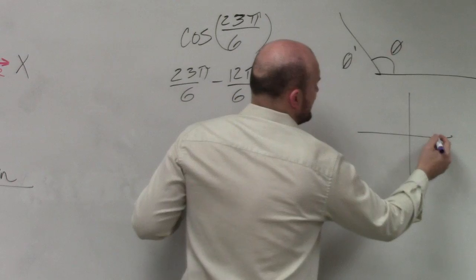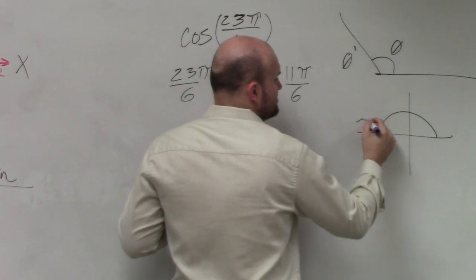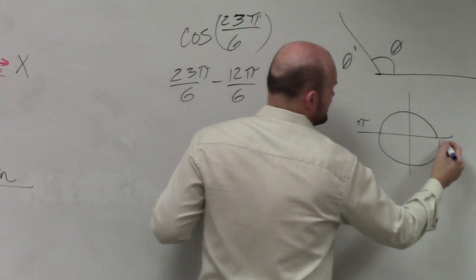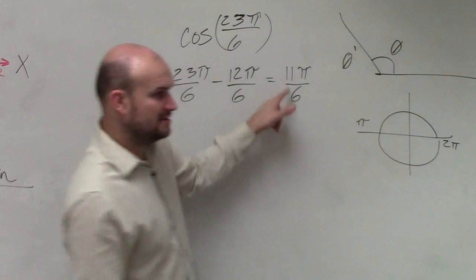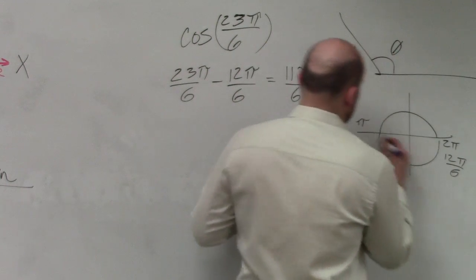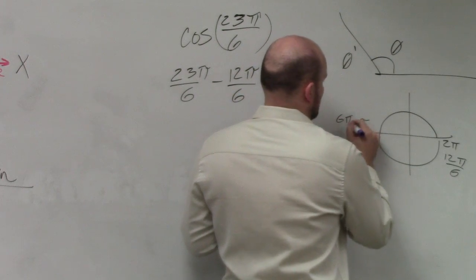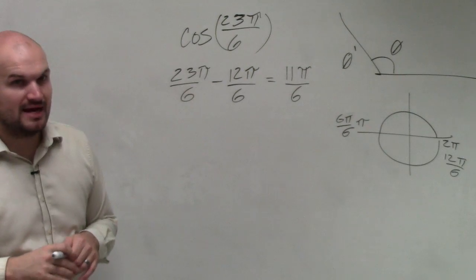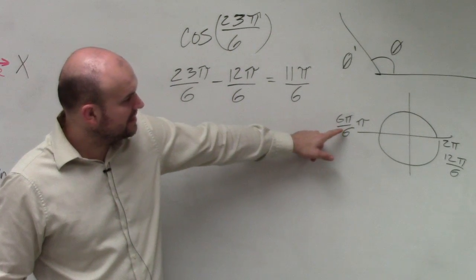So we know that if this is an angle, we would know here is π, and all the way around is 2π, right? Well, let's do that in this case. This would be 12π over 6, and this would be 6π over 6. Correct? So in reality, yes, Libby?